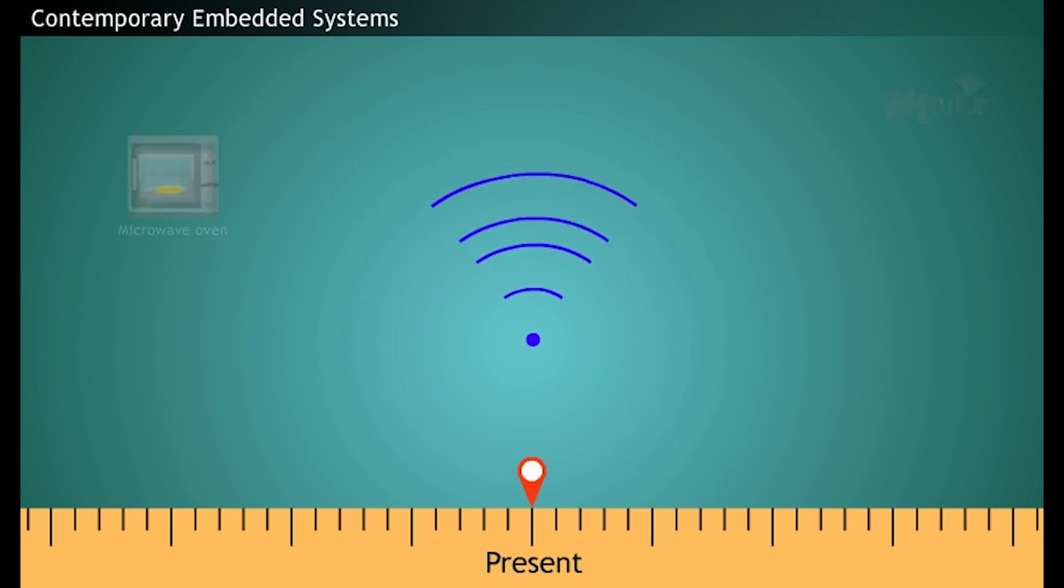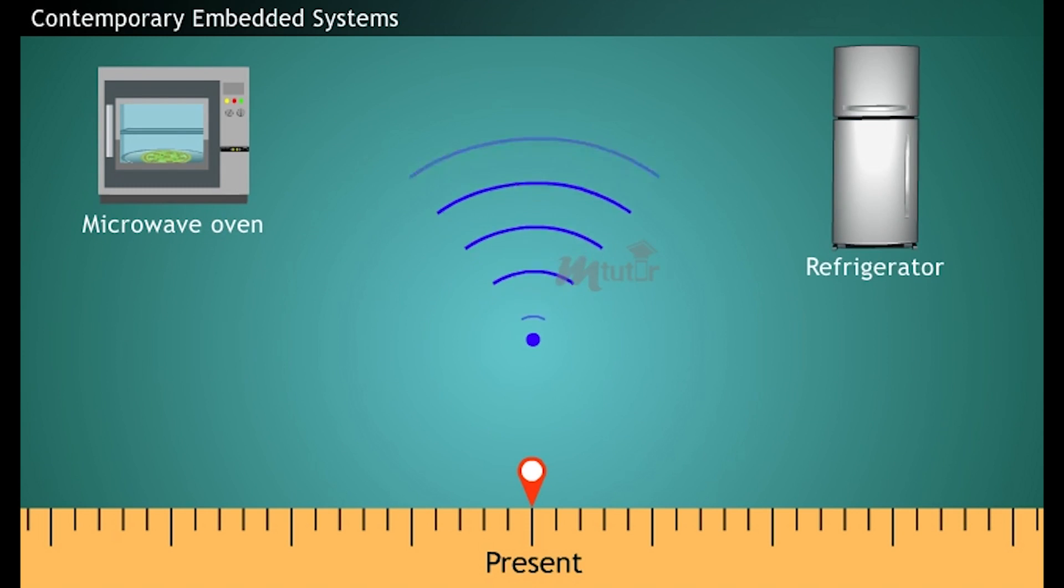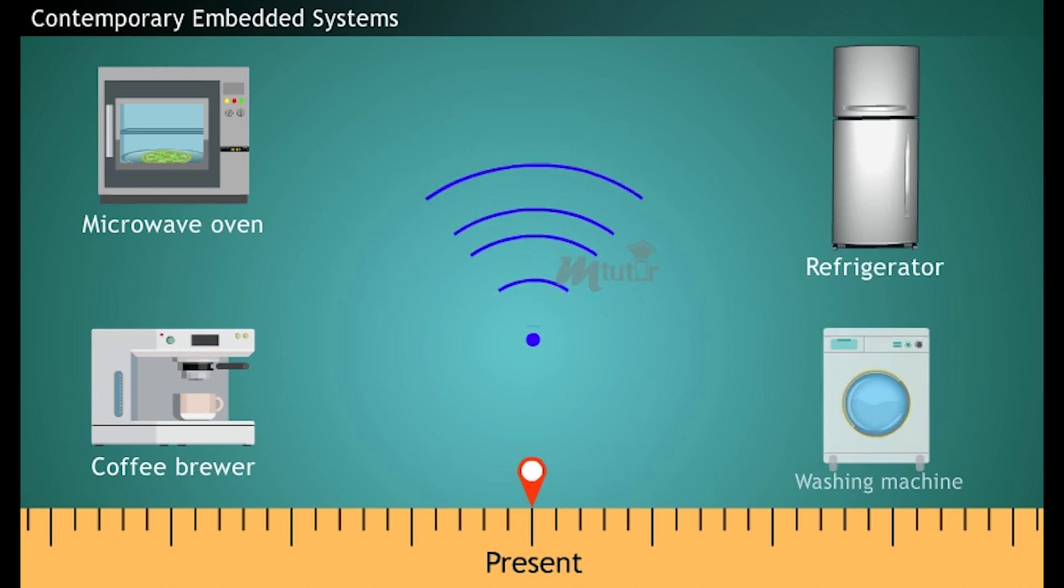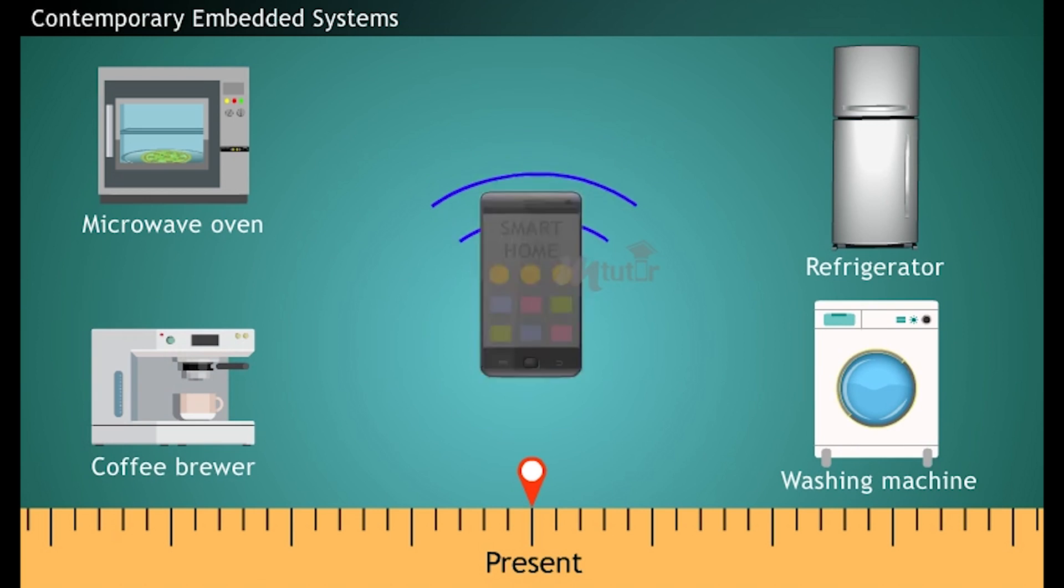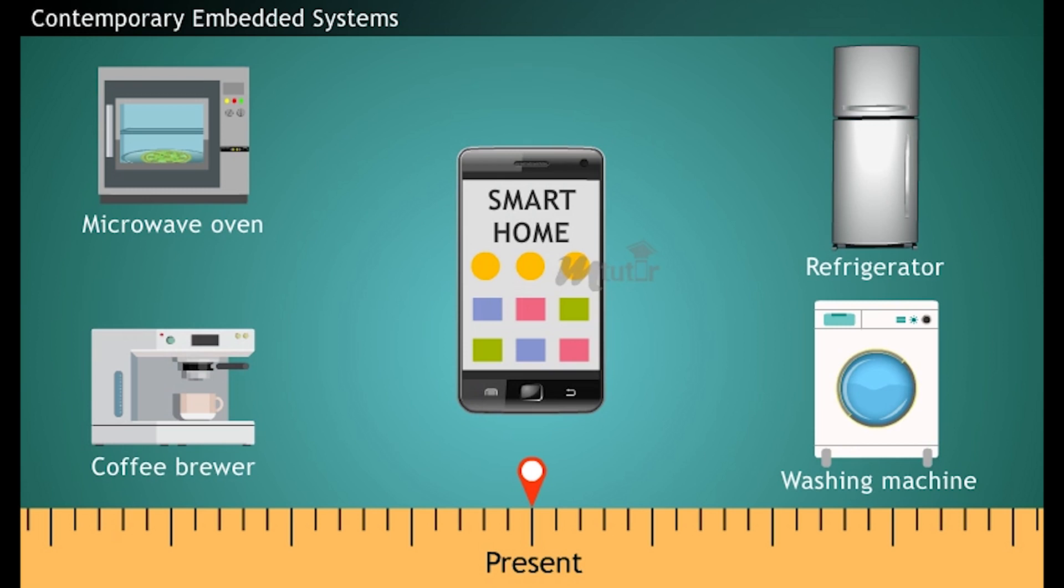The range includes microwave oven, refrigerator, coffee brewer, washing machine, etc. And all these appliances can be monitored and controlled via your smartphone app.